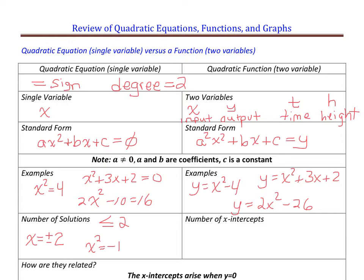Let's show a problem that has only one solution. If I write out this already factored — you can multiply these binomials back together and see the quadratic — hopefully you can see that there's really only one solution. When you put both of these factors equal to zero and solve, you only get x equals positive 1. So that's a case where we have one solution.